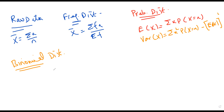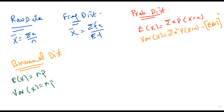When you had the binomial distribution, the formula for E(X) is np, and the formula for the variance is npq. Now we are onto the geometric distribution.